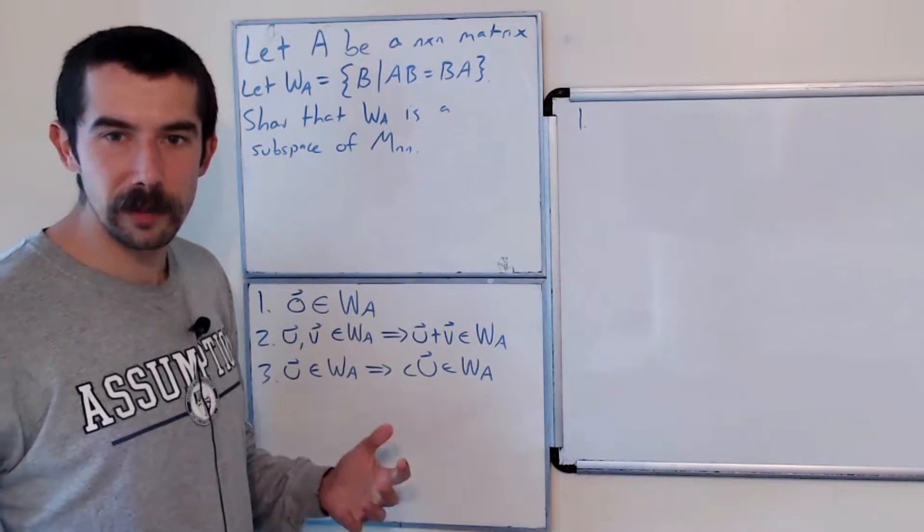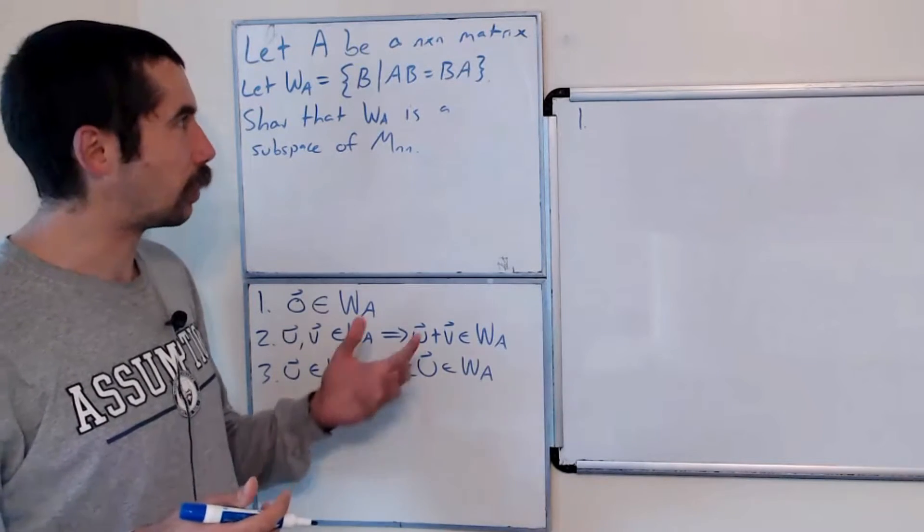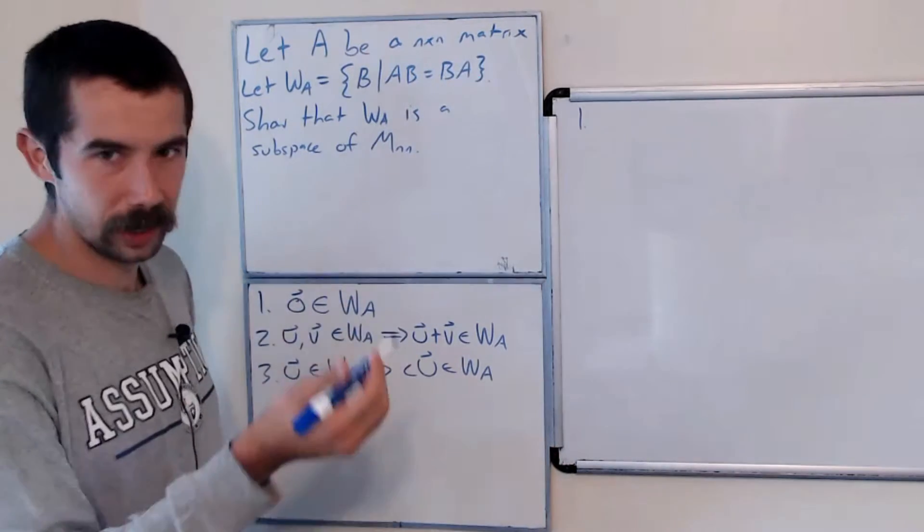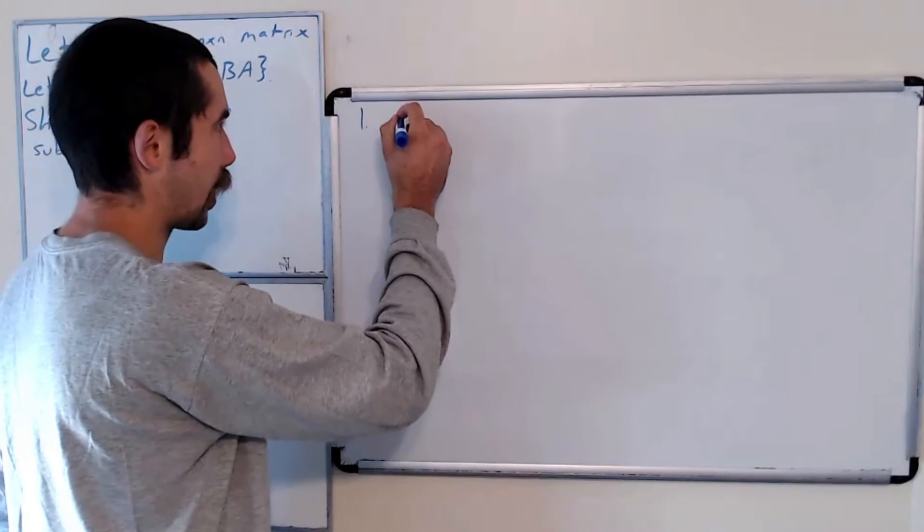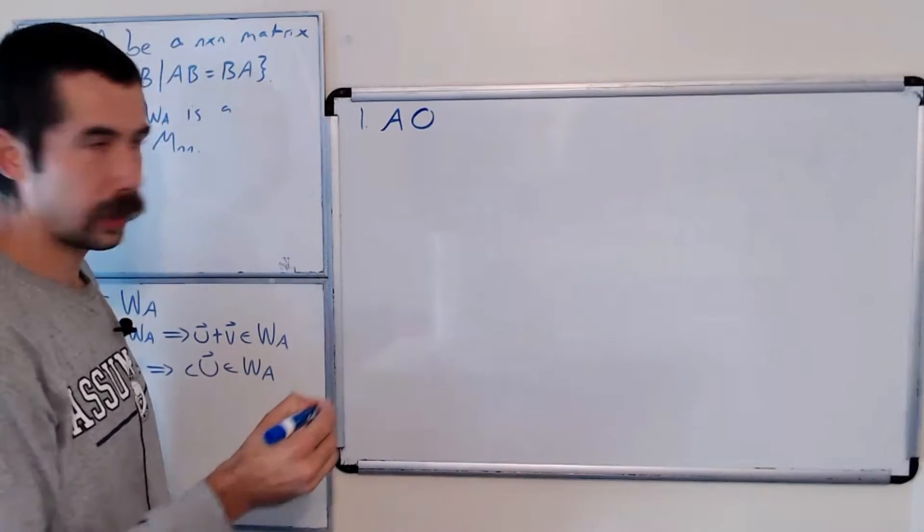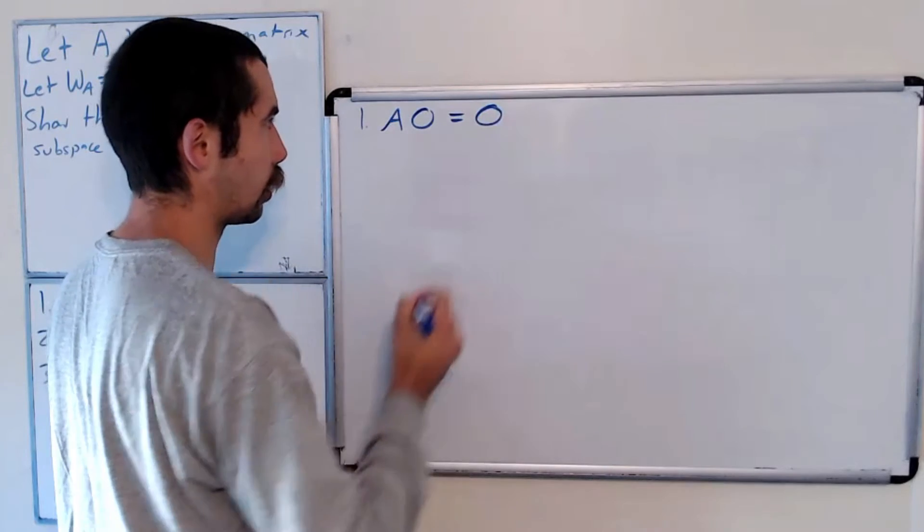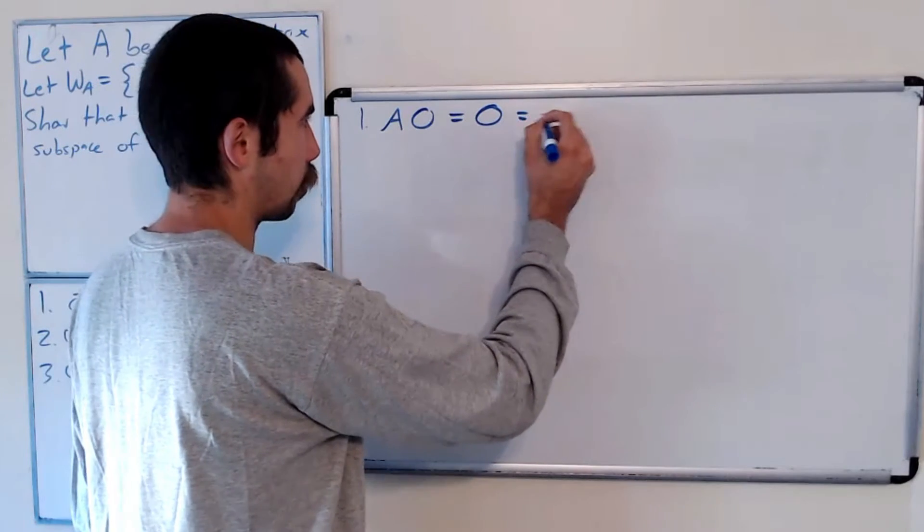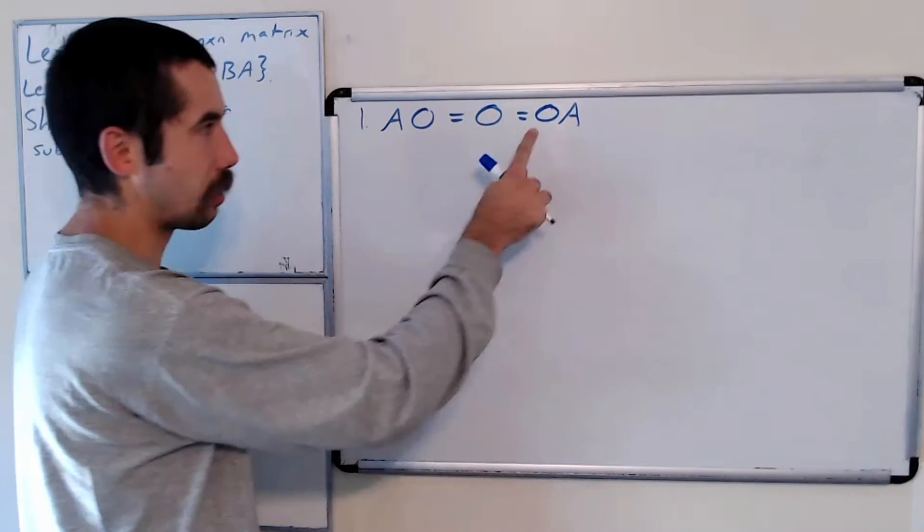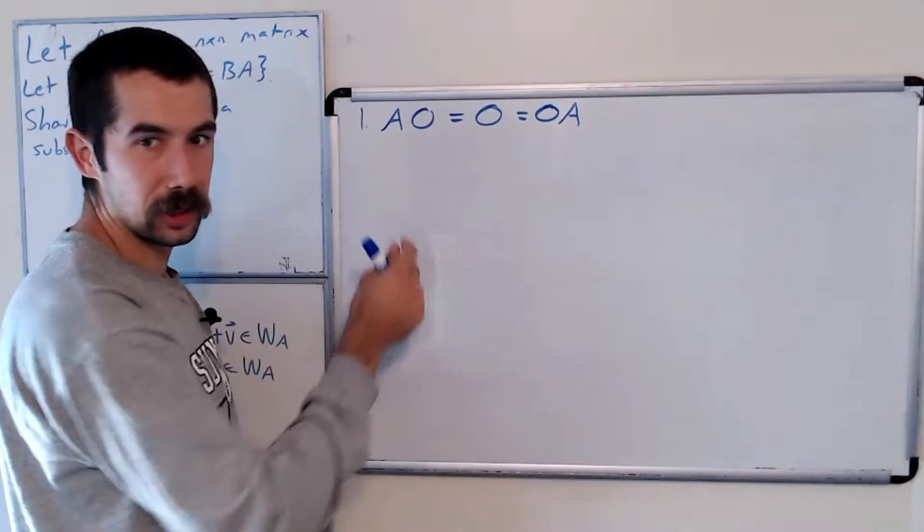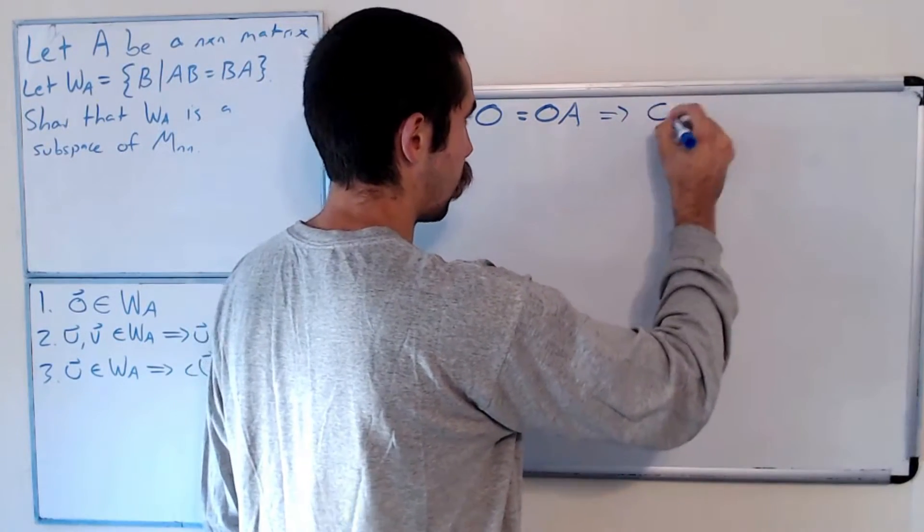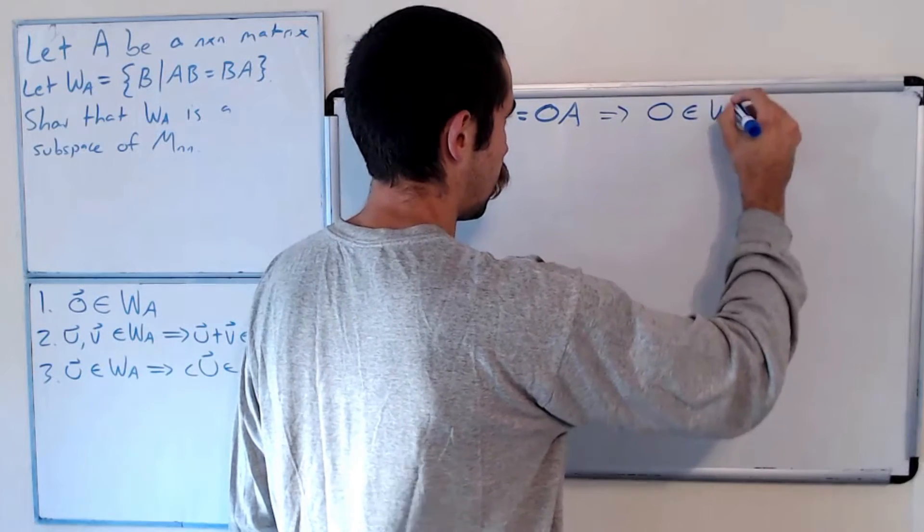What does it mean to be in W sub A? It means that multiplication, that this matrix commutes with A. So let's just show that that's the case. So A times the zero matrix is equal to, well, the zero matrix, which is also equal to zero times A. So A times zero is equal to zero times A, which means that these matrices commute, which means that zero is in W sub A.